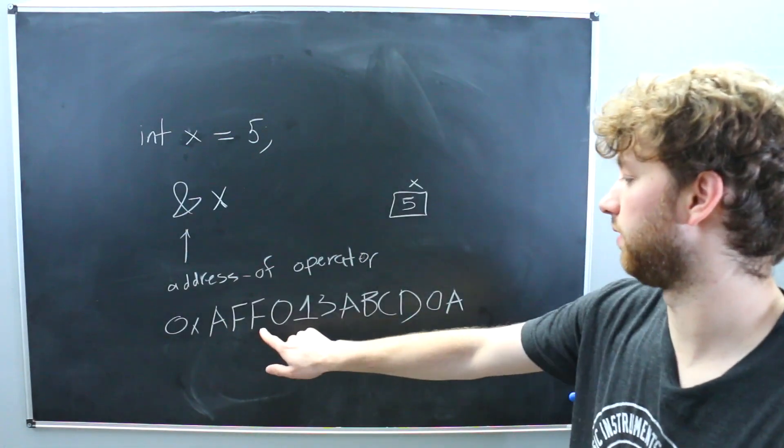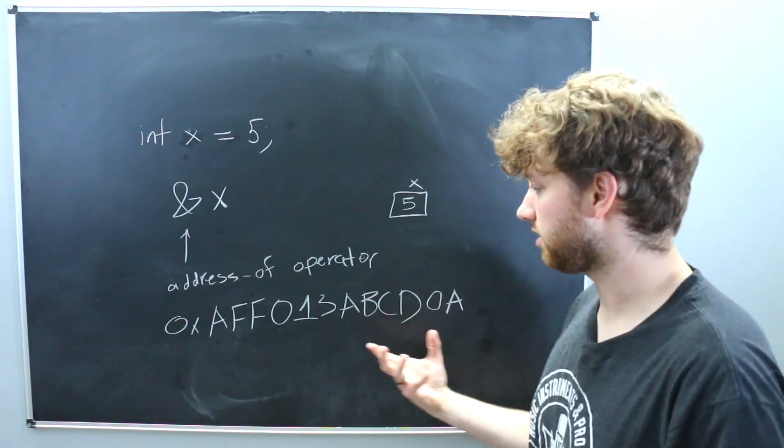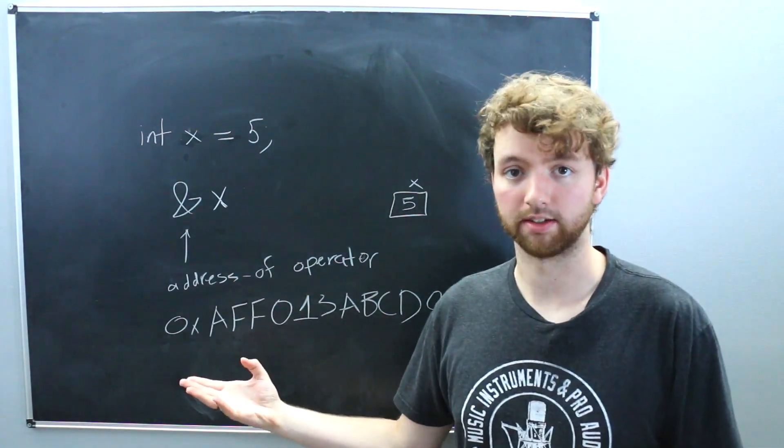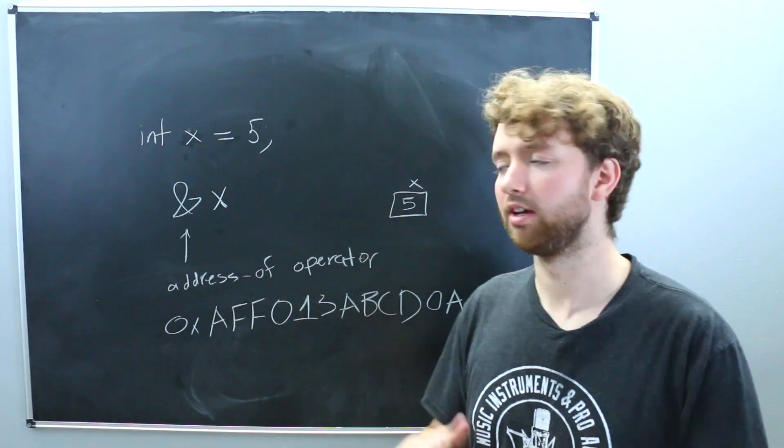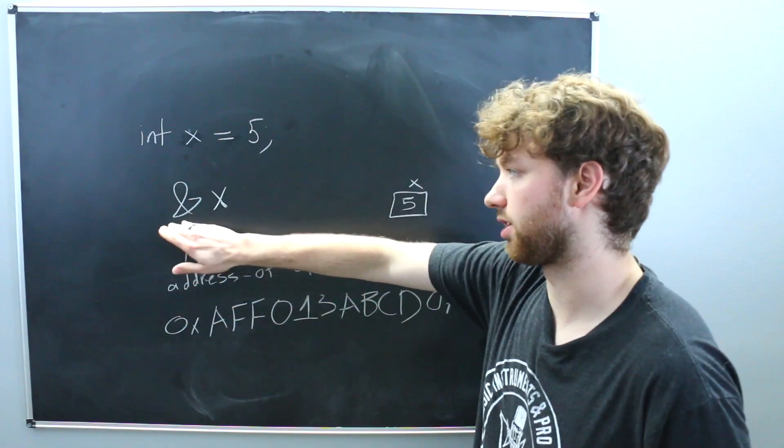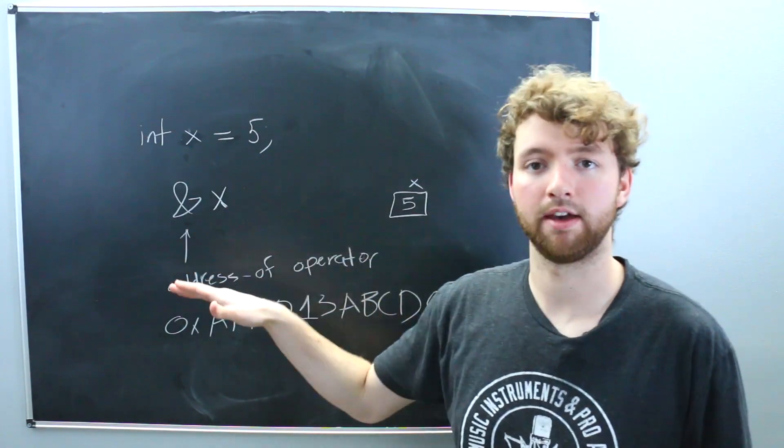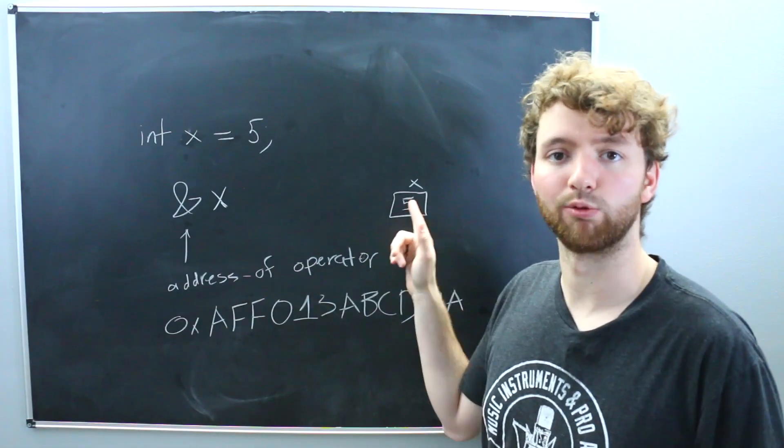All right, so 1, 2, 3, 4, 5, 6, 7, 8, 9, 10, 11, 12. And basically, this is hexadecimal. So this would coordinate to 48 bits in memory. But you don't really have to worry about that. Basically, the point is, you can use this address of operator to get the location of this data right here.